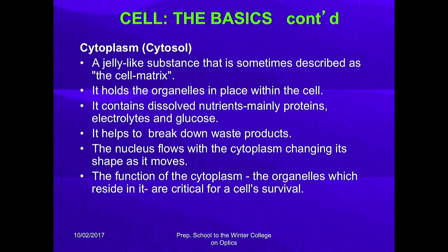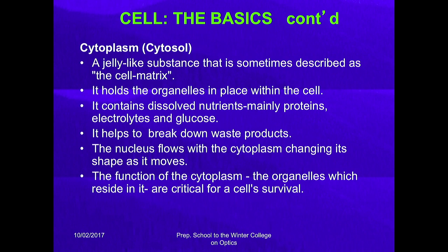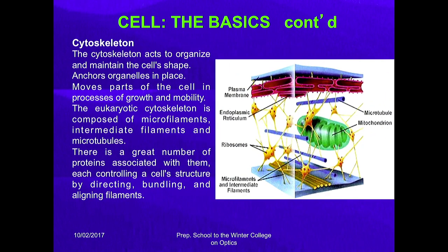The cytoplasm is the second part of the cell — a jelly-like structure in which all other organelles are present. It holds the organelles in place within the cell, contains dissolved nutrients mainly protein, electrolytes and glucose, and helps break down waste products. The cytoskeleton helps retain the shape of the cell, organize and maintain the cell's shelf, anchor organelles in place, and move parts of the cell during growth and mobility. The eukaryotic cytoskeleton is composed of microfilaments, intermediate filaments, and microtubules.